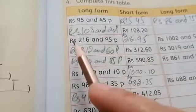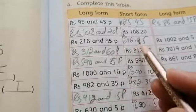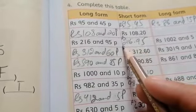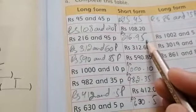Third, Rupees 216 and 95 paisa. How can we write in short form? Rupees 216.95.